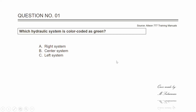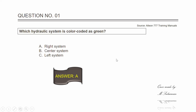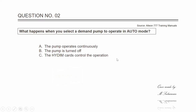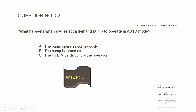Let's come to the quiz. Question number one: which hydraulic system is color coded as green? The answer is A — right system. Question number two: what happens when you select a demand pump to operate in auto mode? The answer is C — the HIM cards control the operation.